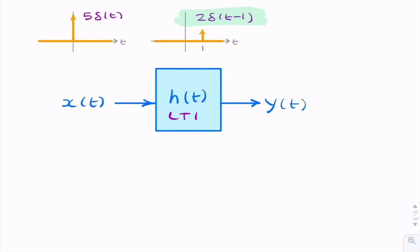what's the output if the input is a scaled impulse, or an impulse with weight 5? So the obvious way of doing this is just simply apply the scaling property,